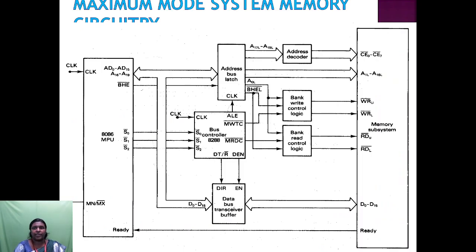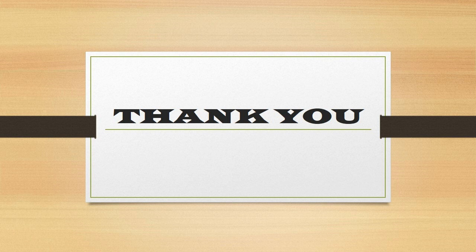These are the two different modes of the 8086 architecture: maximum mode and minimum mode. Today we have discussed the 8086 microprocessor, its architectural diagram, pin diagram, the different registers, flag registers, and control registers. Thank you.